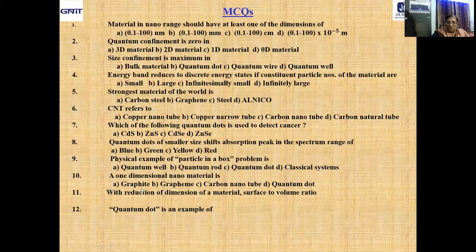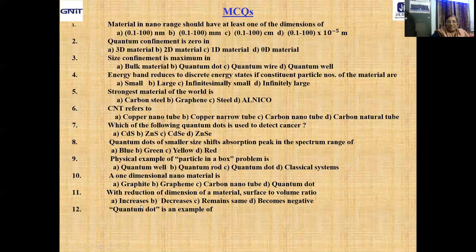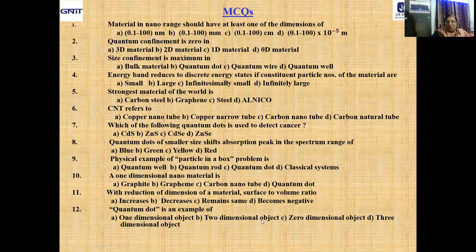Question 11: With reduction of dimension of a material, the surface-to-volume ratio — increases, decreases, remains same, or becomes negative? Answer: Increases, as discussed in detail in the first two lessons. Question 12: Quantum dot is an example of — one-dimensional, two-dimensional, zero-dimensional, or three-dimensional object? Answer: Zero-dimensional object.